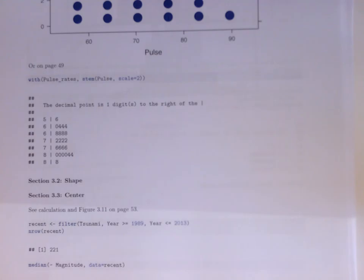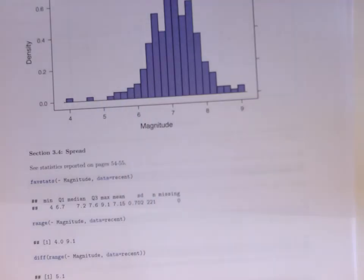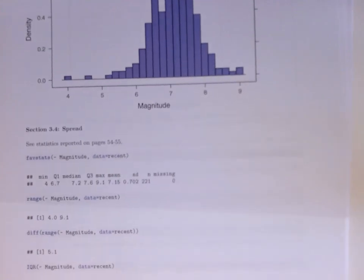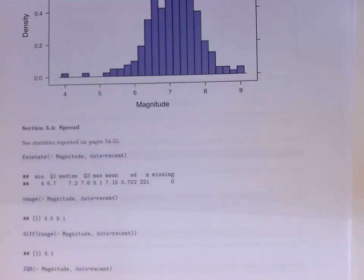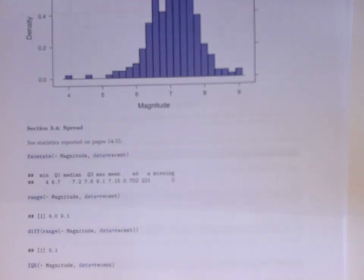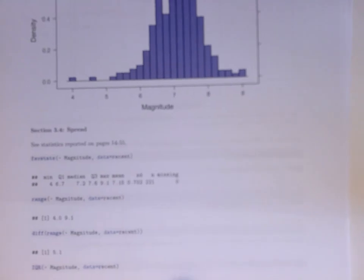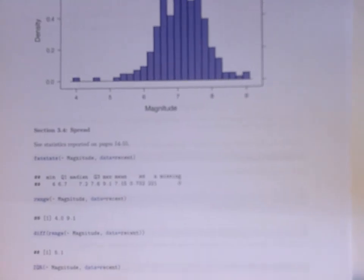There's a number of functions in R. For example, the median function. And the general form of this is we'll say median, tilde, and the name of the variable, comma, and data equals the name of the dataset where things have been brought to. Here we're using the filter function to filter out only those tsunamis that are between 1989 and 2013. It actually matches the value of the back of the book.